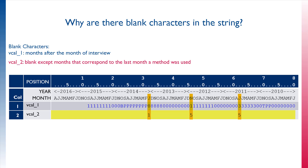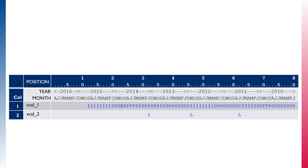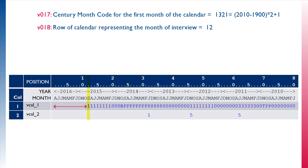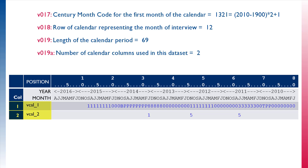There are several variables that can help you understand the dates and length of the calendar. v017 is the century month code for the first month of the calendar. v018 is the row of the calendar representing the month of the interview — for this calendar v018 equals 12, because the calendar does not start until the 12th position in the 80-character string. v019 records the length of the calendar period; in this case the length is 69 months, meaning 69 of the 80 characters in this string have codes and are not blank. v019a is the number of columns used in this dataset. In certain countries and in previous DHS phases there could be columns used that may have data on unions, migration, source of contraception, or other events. In this dataset and in a standard DHS seven questionnaire, there are two columns.